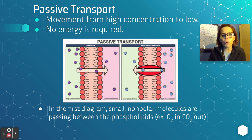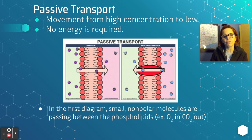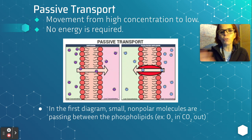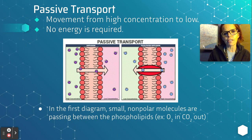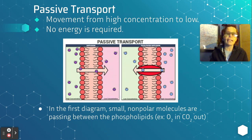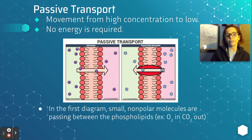Small non-polar molecules — write that down — are passing between the phospholipids. Notice we're going from left to right, from an area of high concentration to an area of low concentration. What are small non-polar molecules that might be transferring across the membrane like that? Oxygen and carbon dioxide are good examples. Oxygen needs to come into cells; carbon dioxide needs to be released out of cells as a waste product.